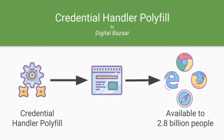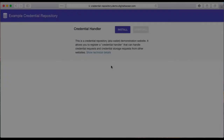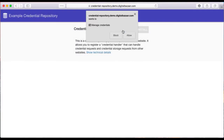The credential handler polyfill that DigitalBazaar has created is a major step forward for verifiable claims on the web. The existence of a polyfill enables this technology to be deployed to 2.8 billion people today without any browser update or software install necessary. The following videos will demonstrate how broadly deployed this technology is today. You have already seen the credential handler API work in Google Chrome. The credential handler polyfill also works in Apple's Safari browser.